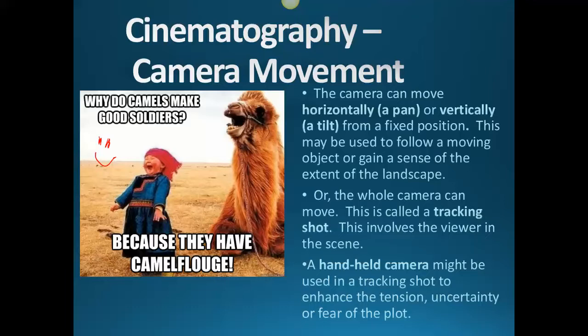The camera can move horizontally — that's called a pan — or vertically, which is called a tilt, from a fixed position. So it can move up and down — that's a tilt — or horizontal, like a panorama. I always think: how do you put a pan in the oven? Horizontally.